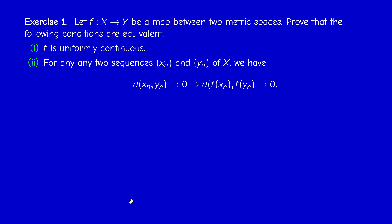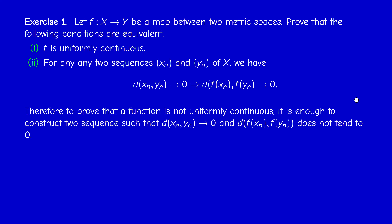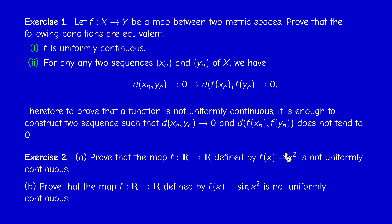As an exercise to test your understanding, prove that the uniform continuity condition is equivalent to: whenever we have two sequences whose distance tends to 0, then the distance between their images tends to 0. Therefore, to prove that a function is not uniformly continuous, it's enough to find two sequences whose distance tends to 0 but whose image distance does not tend to 0. You can use this to show that x squared and sin(x squared) are not uniformly continuous on R.